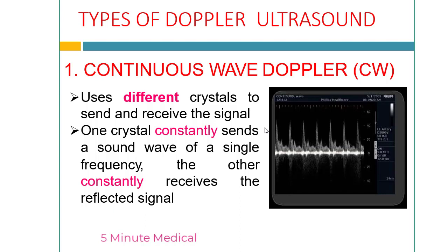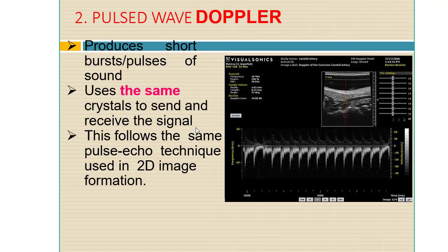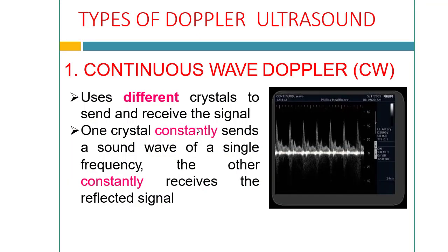In Doppler ultrasonography, one mode is continuous wave (CW) Doppler. CW mode uses different crystals to send and receive the signal. One crystal constantly sends a sound wave of a single frequency, while the other constantly receives the reflected signal.